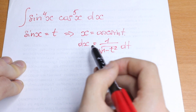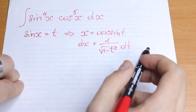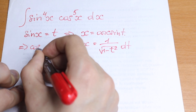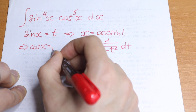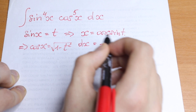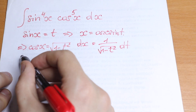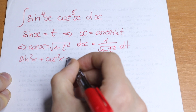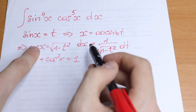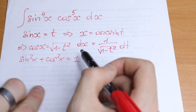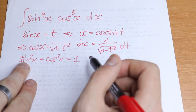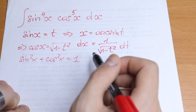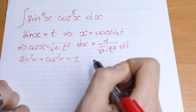We also know that cosine x equals the square root of 1 minus t squared. Because we know the formula: sine squared x plus cosine squared x equals 1. So cosine x equals the square root of 1 minus sine squared x. Since sine x equals t, cosine x equals the square root of 1 minus t squared.